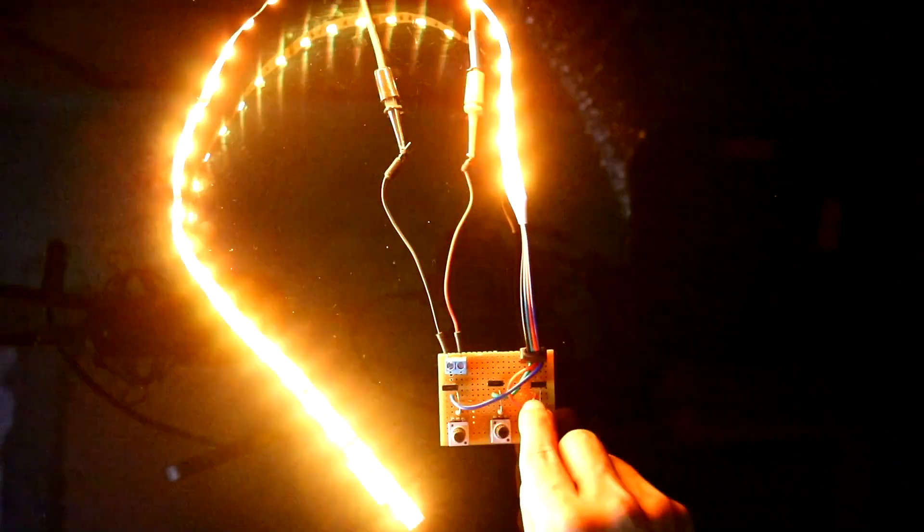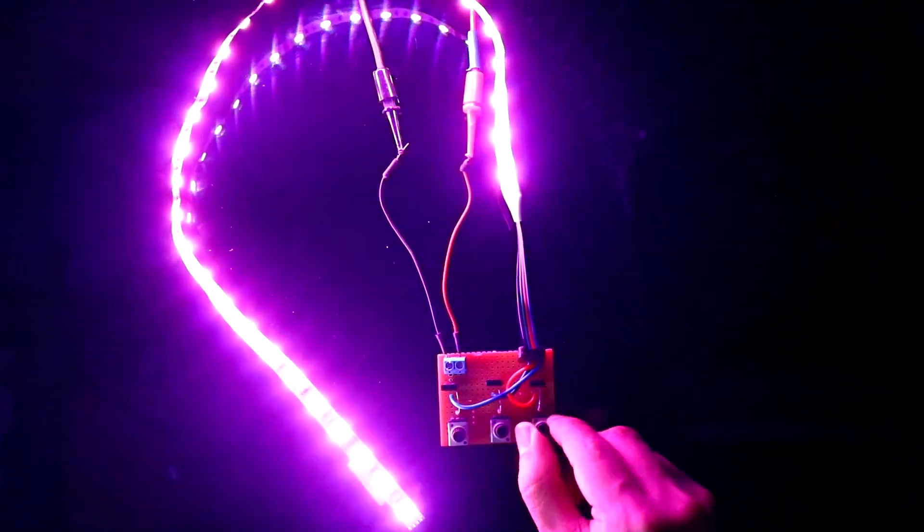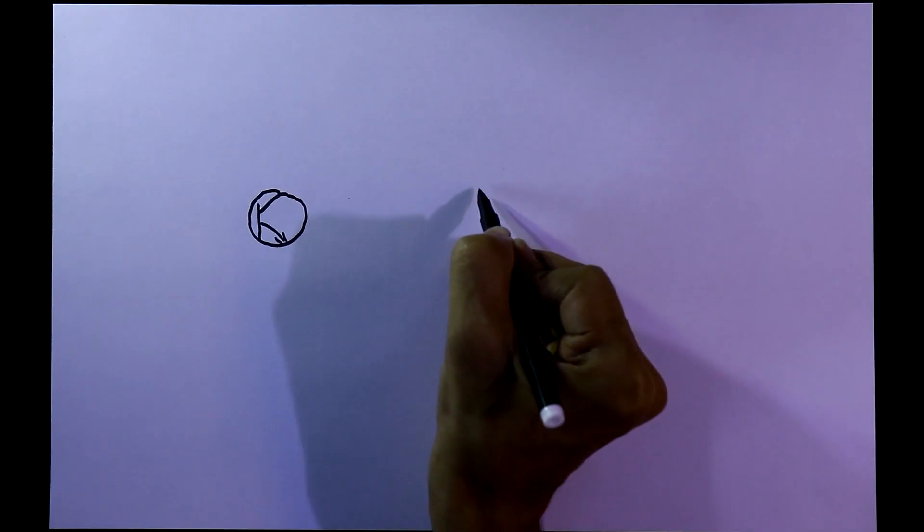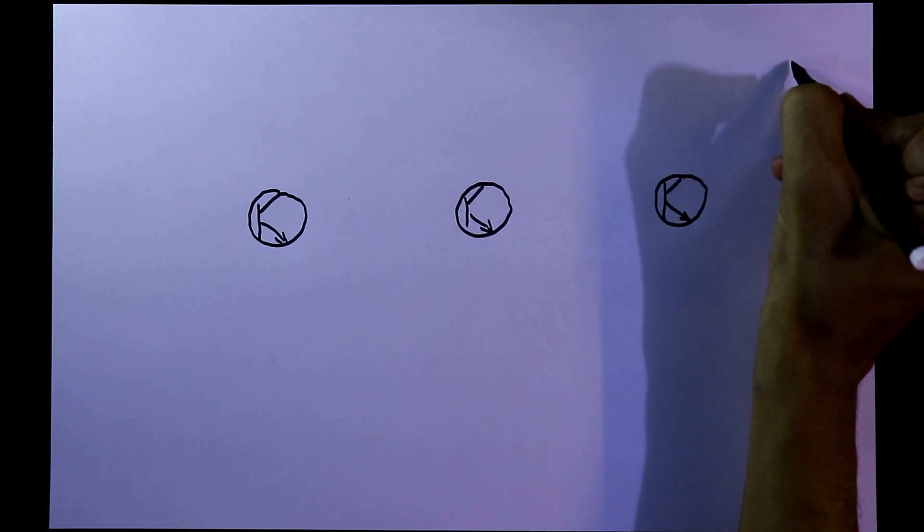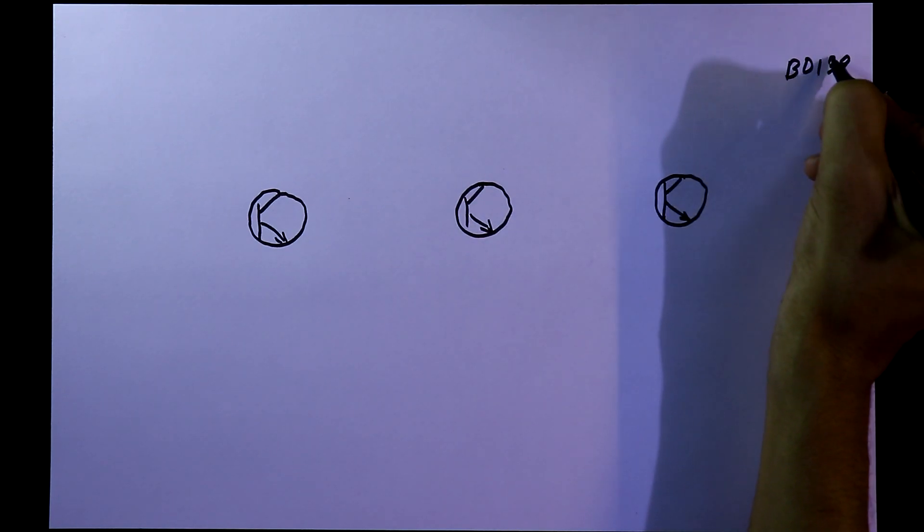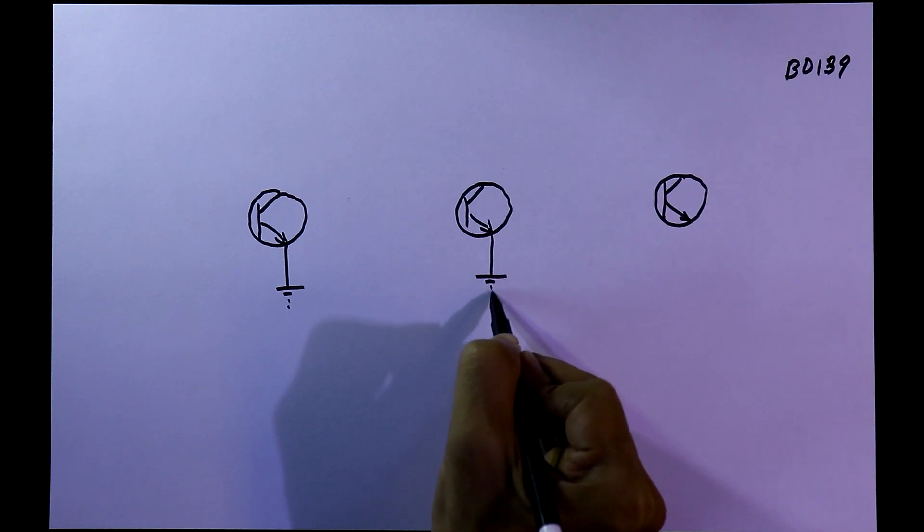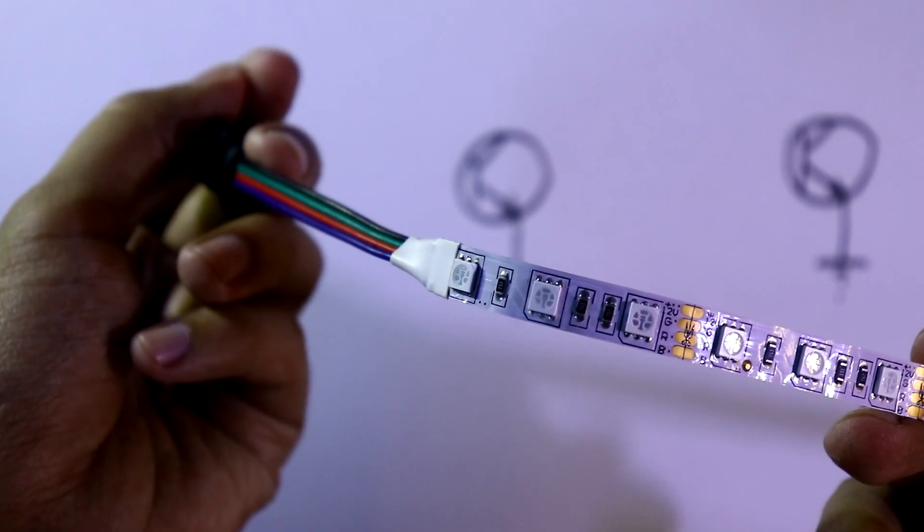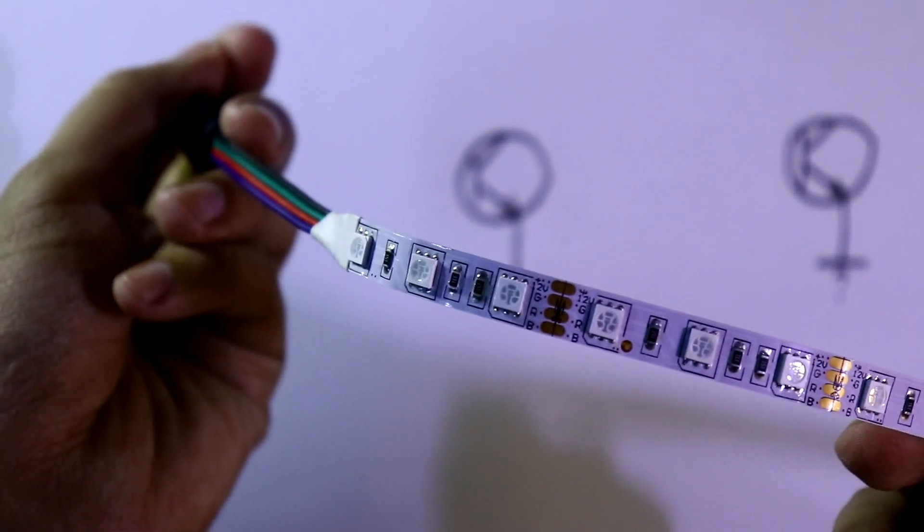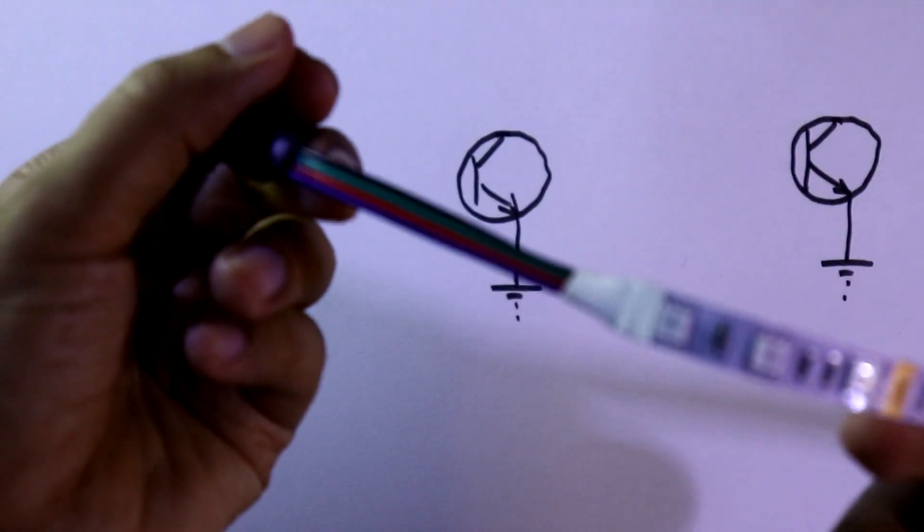Let's get started. We'll see the circuit diagram. We need three transistors, BD139. All the emitters are connected to the ground. I'm going to use this RGB LED strip.